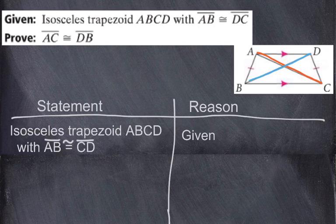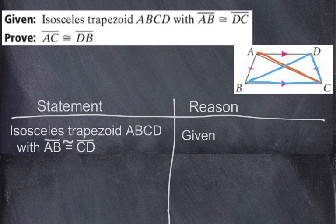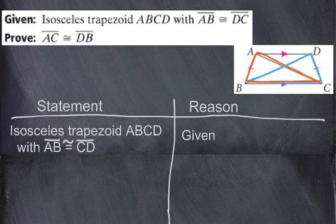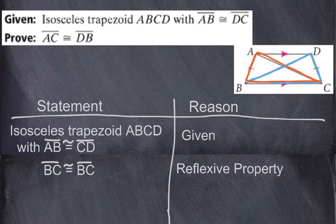What we need to do is prove some congruent sides and angles using two triangles. Diagonal BD is part of one triangle, and diagonal AC is part of another. First, look for a shared side — they both share side BC. So BC is congruent to BC by the reflexive property. Now we have two pairs of sides that are congruent.